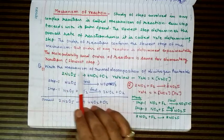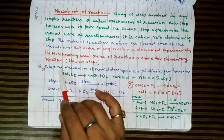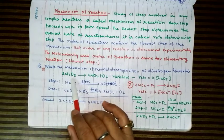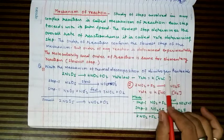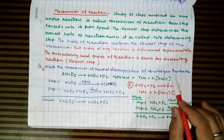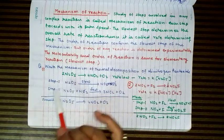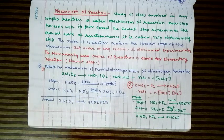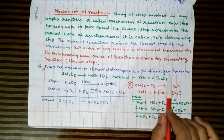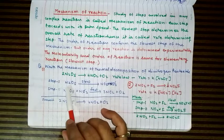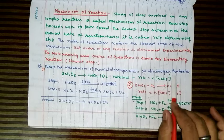Let us write the mechanism of the thermal decomposition of dinitrogen pentoxide (N2O5). In this reaction, two molecules are involved, so molecularity should be two. However, if we look at the experimentally given rate law expression, the rate of reaction depends on N2O5 to only the first power — order is one. This means not all molecules of N2O5 are in the rate-determining step, so this reaction takes place in a number of steps.